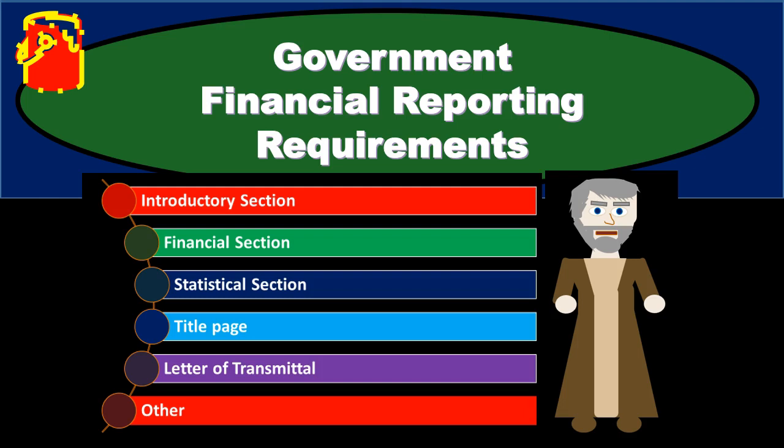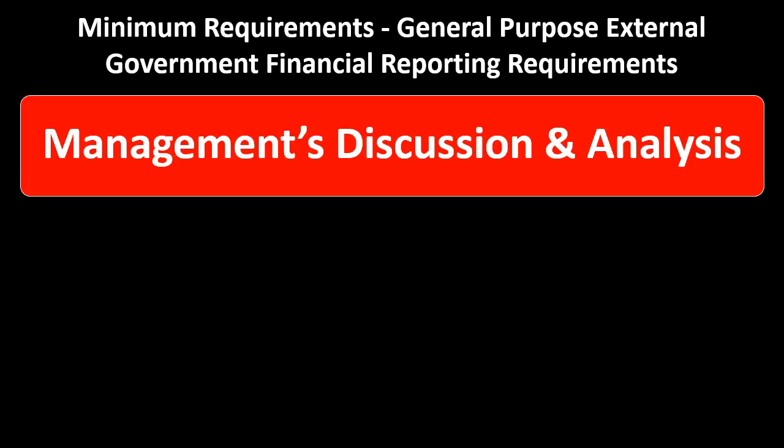In this presentation we will take a look at government financial reporting requirements, starting with the minimum requirements for general purpose external government financial reporting. These include management's discussion and analysis, which is part of the required supplemental information. This is a key component for governmental organizations because it's designed to give a narrative, easy-to-read format of the basic financial statements, current financial position, and results of financial activities compared to the prior year.